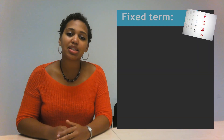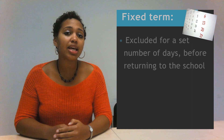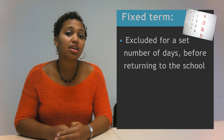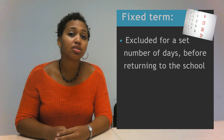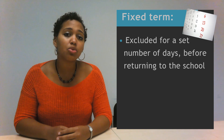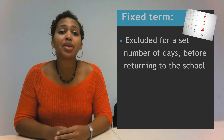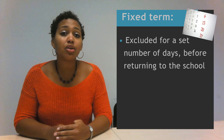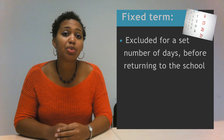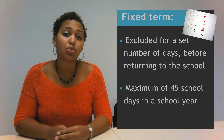Our next type is a fixed term exclusion, which is where a pupil is excluded for a set number of days before returning to the school. Days in this context means school days. It is possible for a pupil to be excluded for one or more fixed periods up to a maximum of 45 school days in a school year.